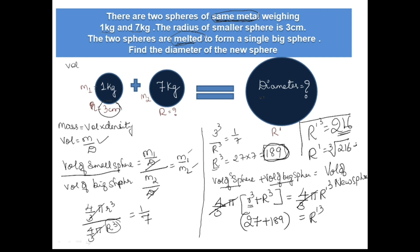Check out, so now we got this radius r' as 6, then diameter will be 2r, that is 12 centimeters. Amazing, very good question.